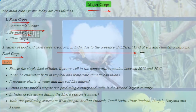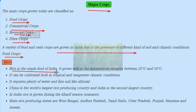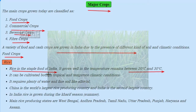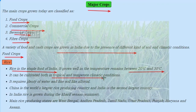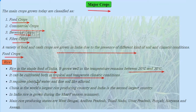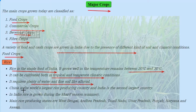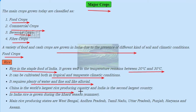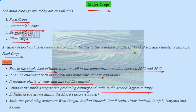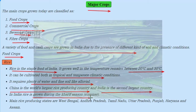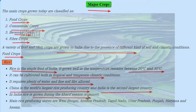What are food crops? Rice is the staple food of India. It grows well in a temperature between 20 to 30 degrees centigrade. It can be cultivated both in tropical and temperate climatic conditions. For the cultivation of rice, it requires plenty of water and the soil should be alluvial. China is the world's largest producer of rice, and India is the second largest producer. In India, rice is grown during the Kharif season, i.e., during summer.